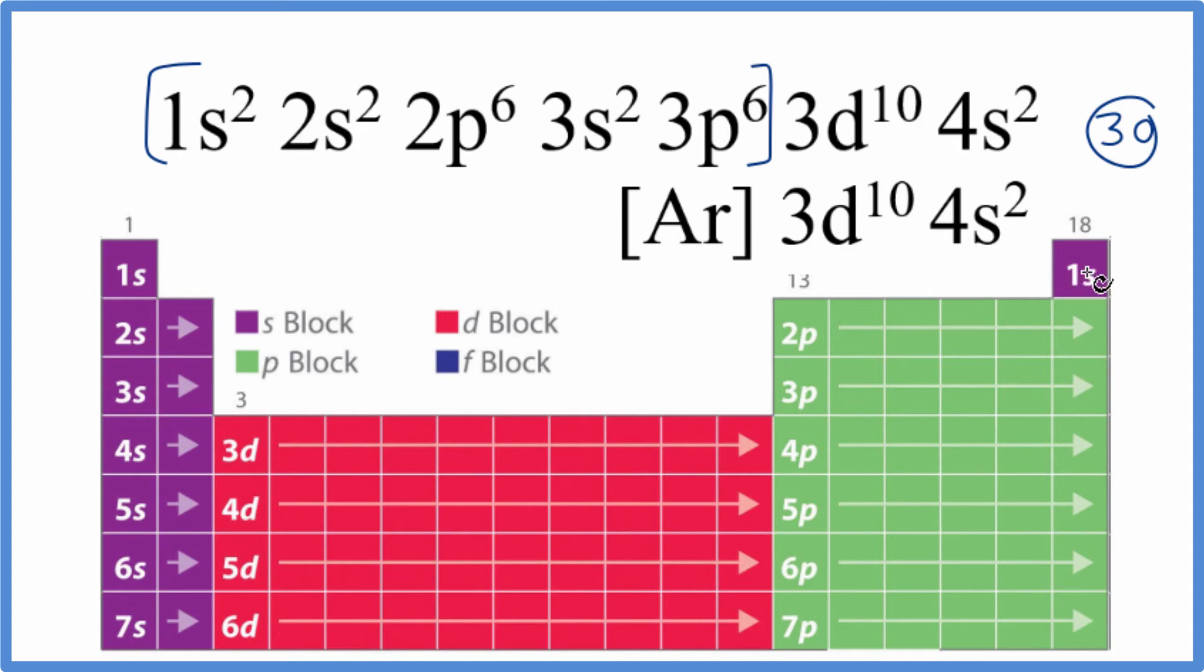So we have 1s1, 1s2—s is full with 2. There's our 2s1 and 2. P holds up to 6. We have 2p1, 2, 3, 4, 5, 6, 3s2, 3p6.